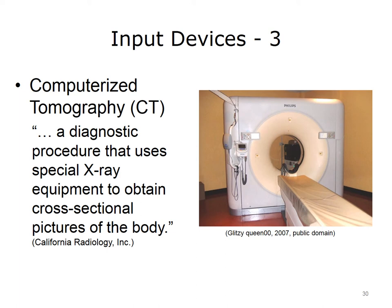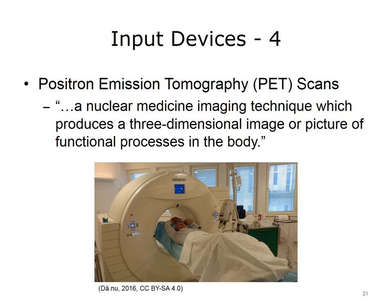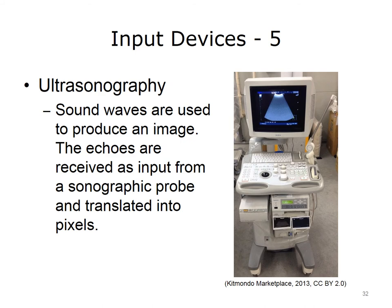The world of healthcare offers many different computer input devices. One device a health informatician may encounter is the computerized tomography or CT scanner, which uses special x-ray equipment to obtain cross-sectional pictures of the body. The image shown displays a Philips 64-slice Brilliance scanner. Another type is the positron emission tomography or PET scan, a nuclear medicine imaging technique that produces a three-dimensional image of functional processes in the body. Another healthcare-related input device is a sonographic instrument, which uses sound waves to produce an image — this technology is known as ultrasonography.